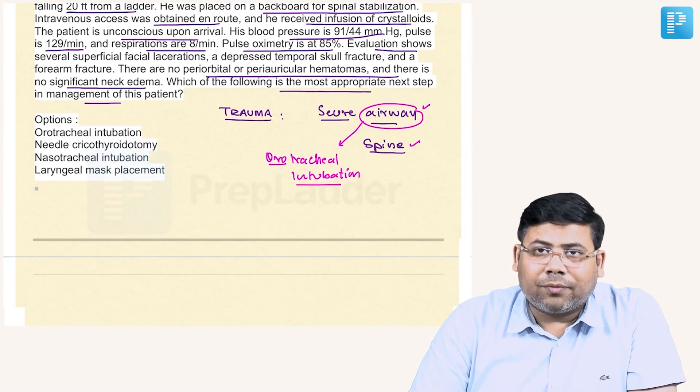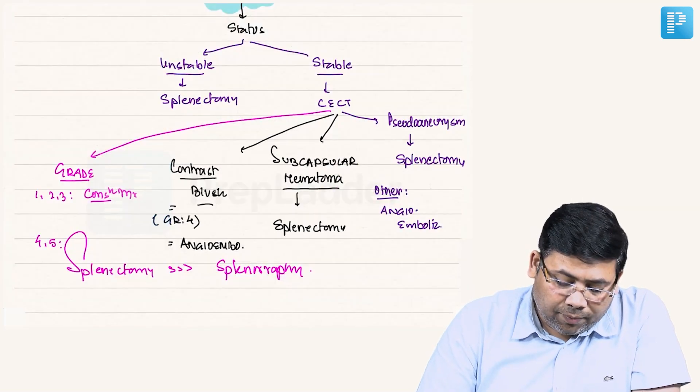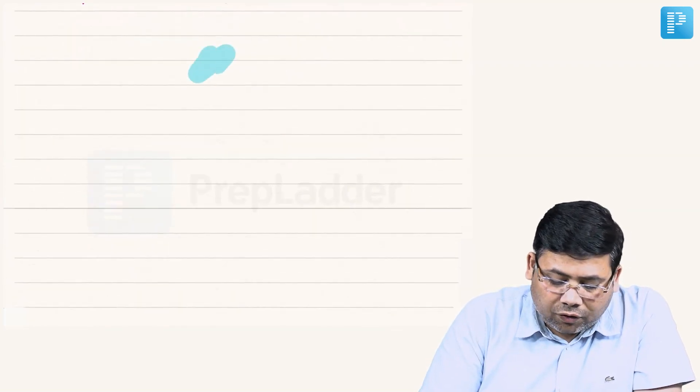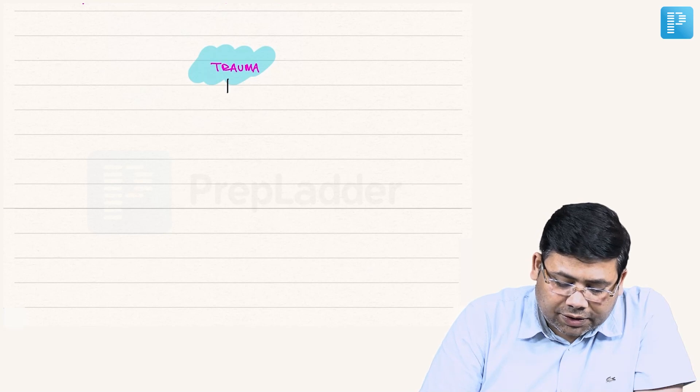So orotracheal intubation should be the next step, and after this you will follow anything. We secure airway and spine because this is the most common cause of mortality. Whenever we have a patient of trauma, the basic concept in the ER is that we do a patient survey.